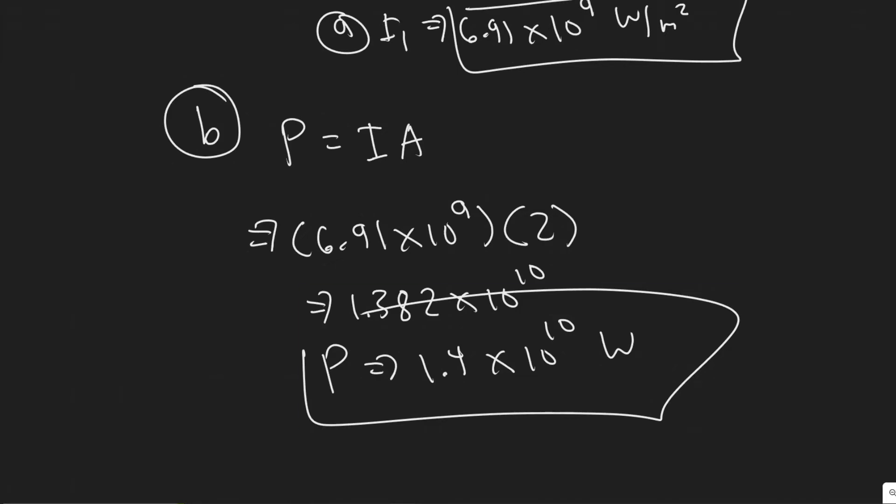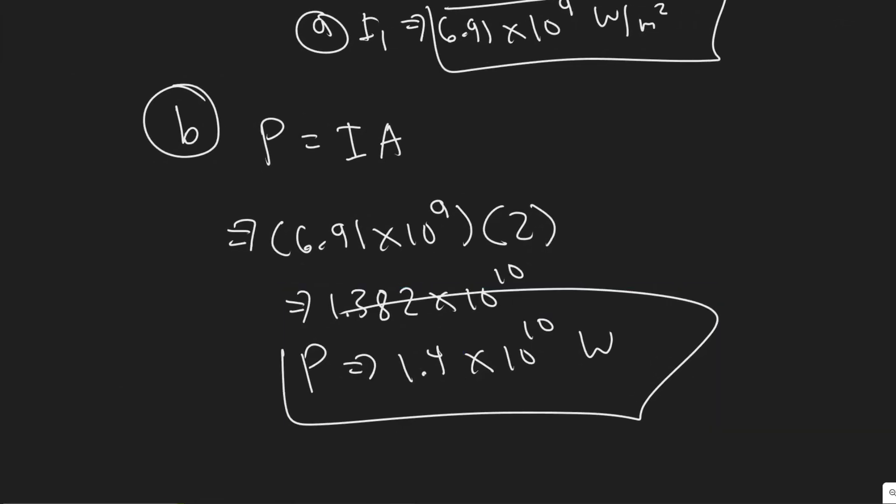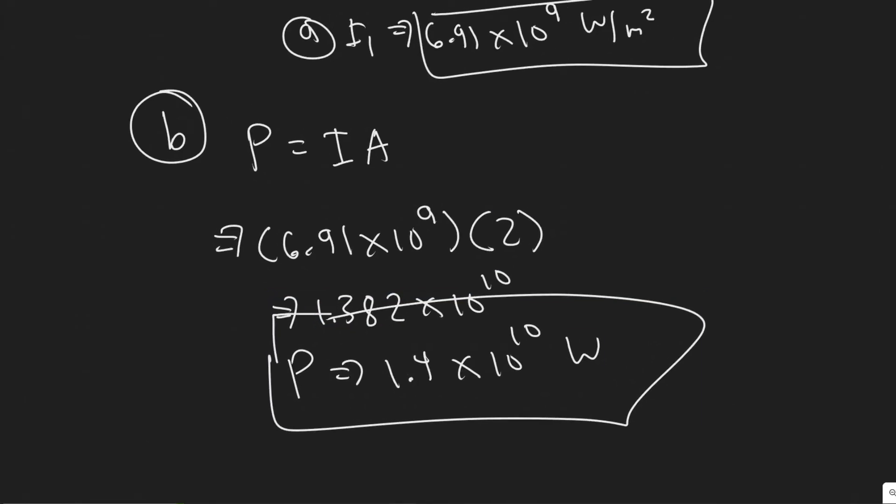So we can just denote it with P. So 1.4 times 10 to the 10 watts. You can round it however you'd like. Just make sure you do it how your teacher wants you to.